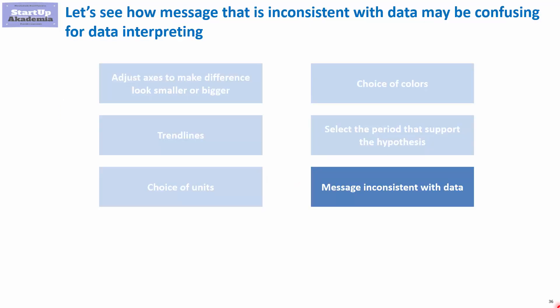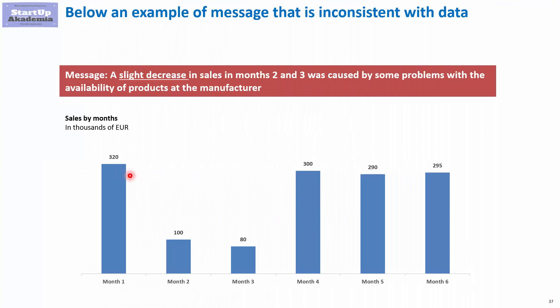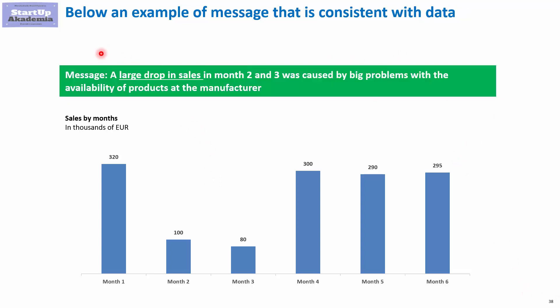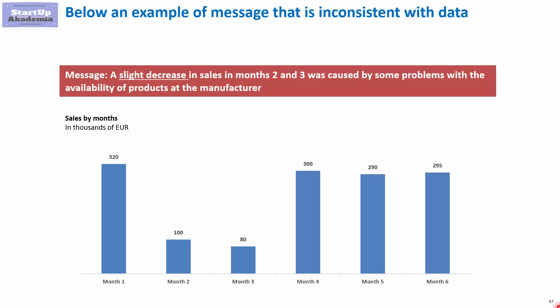The last way to manipulate perception in a more subtle manner is to play with the message — we don't change the charts directly, we just adjust the message. For example, we've got sales by month, and as you can see, in month two there was a huge drop which continued in month three. Then in month four we came back to around 300,000 euros in sales. However, the message written says there was only a slight decrease in sales in months two and three caused by small problems. The proper message should actually state that there was a large drop in sales. The data are the same — we just impacted the message.